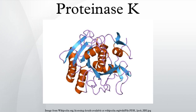In molecular biology, Proteinase-K is a broad-spectrum serine protease. The enzyme was discovered in 1974 in extracts of the fungus Engyodontium album. Proteinase-K is able to digest native keratin, hence the name Proteinase-K.